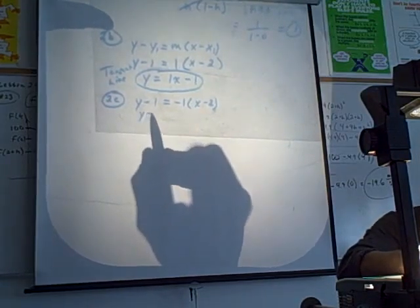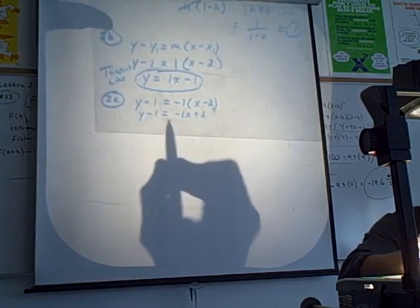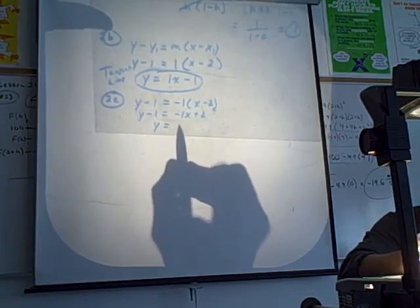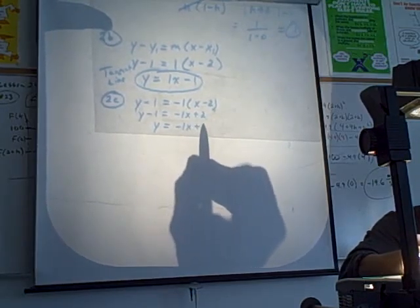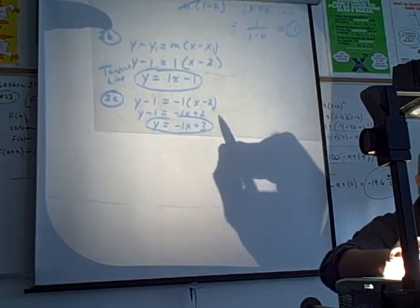So that's going to give me y minus 1 equals negative 1x plus 2. Add 1 to both sides, I get y equals negative 1x plus 3. That's the equation of the normal line.